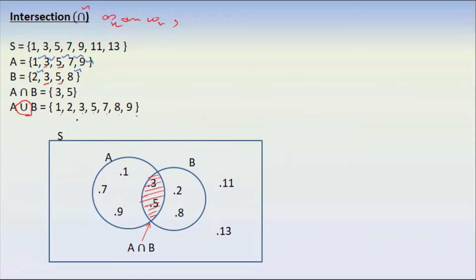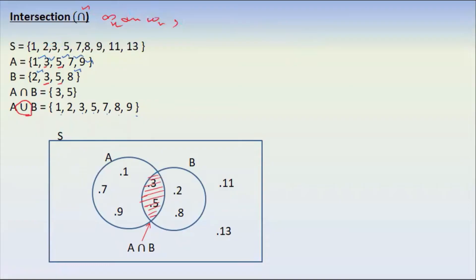This is the union. This is the interset union. 1, 2, 3, 5, 7, 8, 9, 11, 13. This is the union.